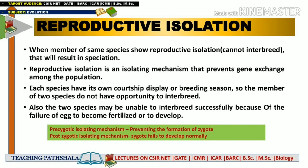Two species may also be unable to interbreed successfully due to failure of an egg to become fertilized or to develop. Reproductive isolation can be categorized into two mechanisms: first is the prezygotic isolating mechanism — preventing the formation of a zygote — and second is the postzygotic isolating mechanism — where the zygote fails to develop normally. In our upcoming video we will study these two types of isolating mechanisms, and in the next video we will start with types of speciation: allopatric, peripatric, and sympatric. Thank you for watching.